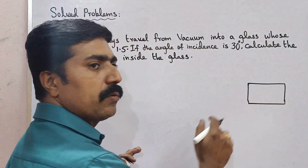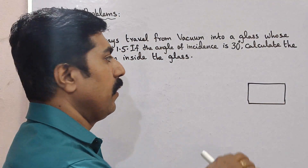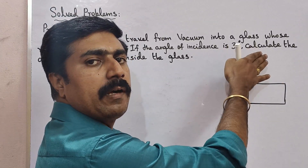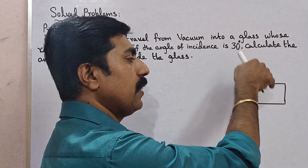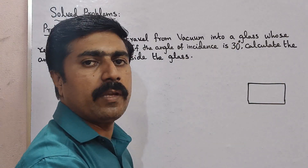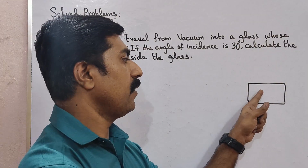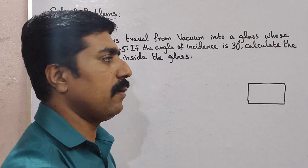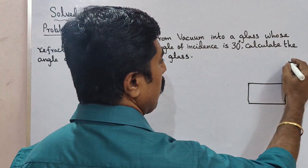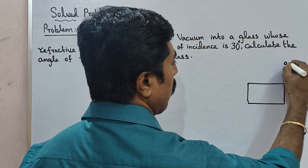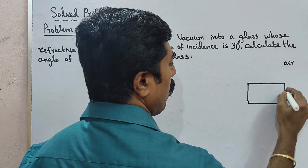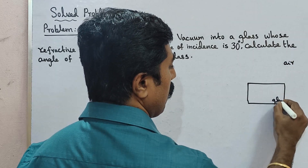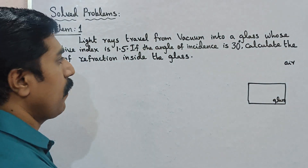Glass is the denser medium and air or vacuum is the rarer medium. Light moves more easily through air or vacuum than through glass. So in our diagram, the top part is air and the bottom part is glass.